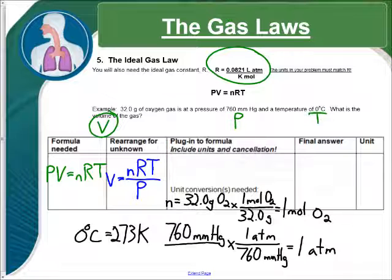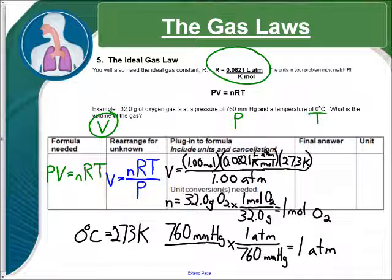Now that we have all our numbers, we're going to plug them in. V equals 1.00 moles times 0.0821 liters atmospheres divided by Kelvin moles times 273 Kelvin. Now, all of this is divided by one atmosphere. Our units are going to cancel. The moles cancel, the atmospheres cancel, the Kelvin cancels.